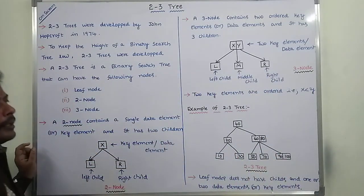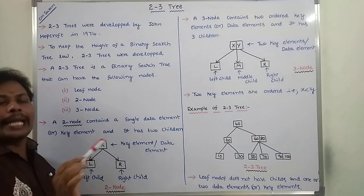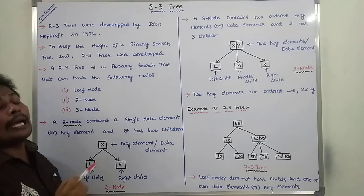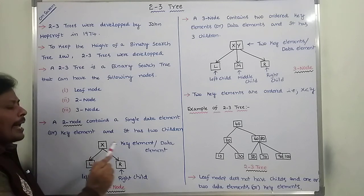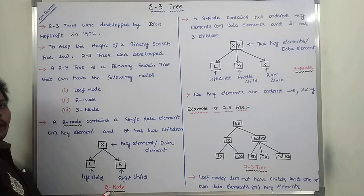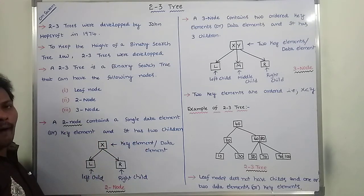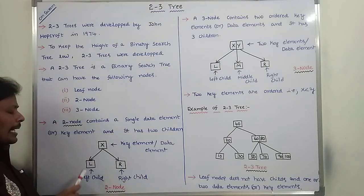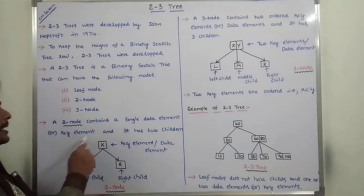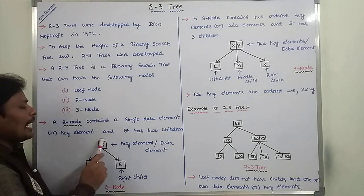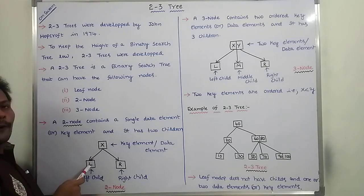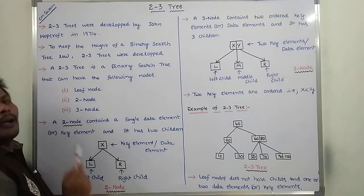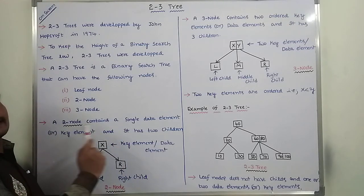The second type is a two node. A two node contains a single data element or key element and it has two children. Here X is the key element or data element. The left child's value is less than the key element, and the right child's value is greater than the key element. It follows the Binary Search Tree condition.